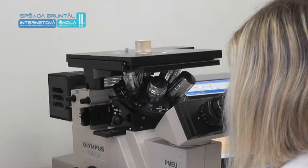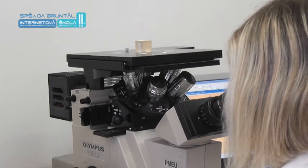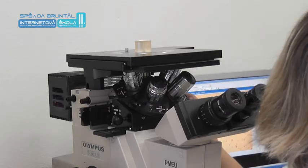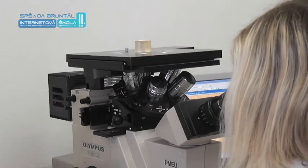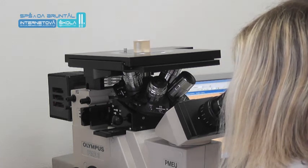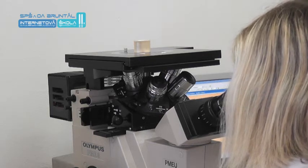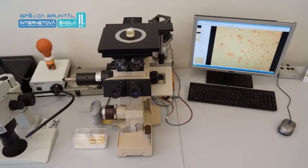The optical system of the metallographic microscope consists of an objective, eyepiece, auxiliary lenses, mirrors and prisms. The basic part of the microscope is the objective, which creates a magnified and inverted image of the studied structure. The objective consists of several lenses, because focusing with a simple lens is not perfect.